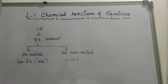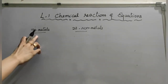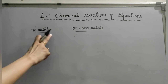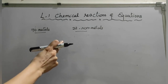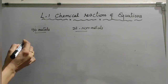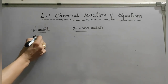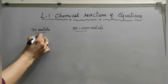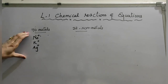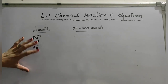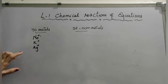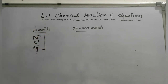So to summarize: metals show positive ions because they are electron donors; non-metals show negative ions because they are electron acceptors. Now let's discuss which metals show plus one, plus two, and plus three ionic states. The metals that show plus one ionic state are sodium, potassium, and silver.